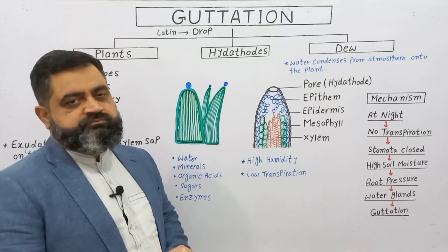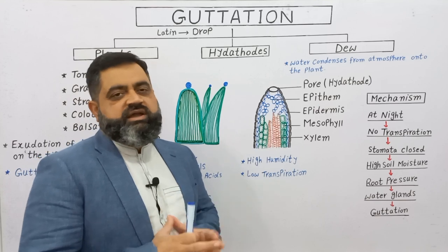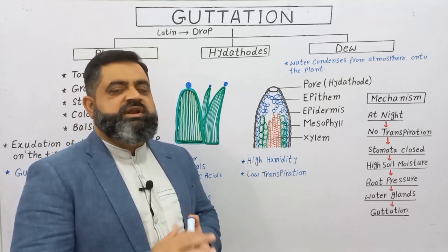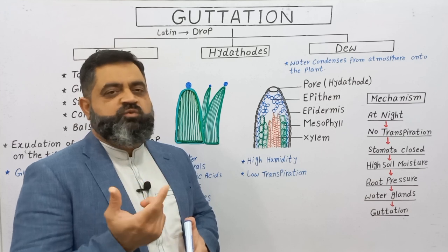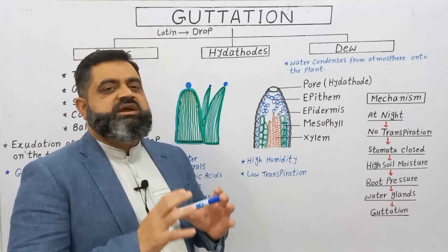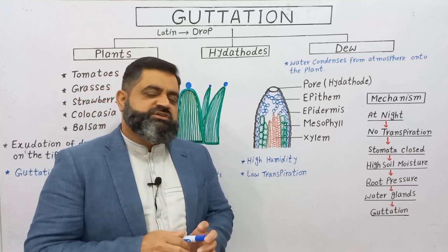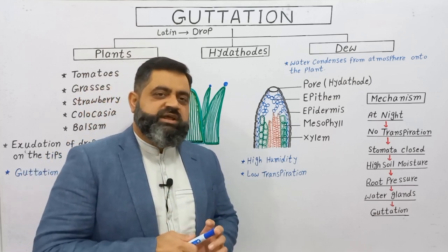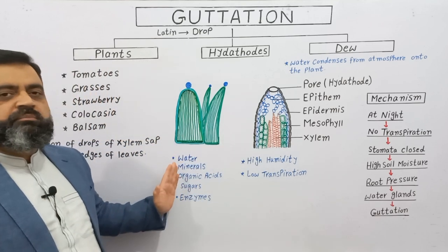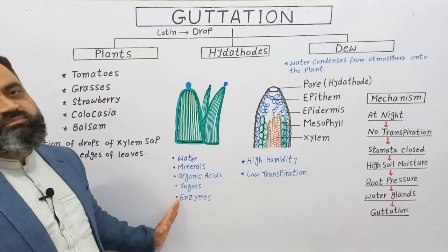After guttation, when there is sunlight, this water sometimes dries out and leaves a mark — white or another color — which is known as guttation burns. The water of guttation, which comes from the xylem elements and is also known as xylem sap, may contain water, minerals, organic acids, sugars, and some enzymes.